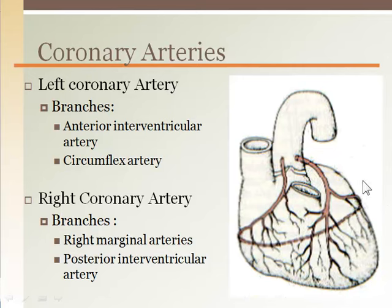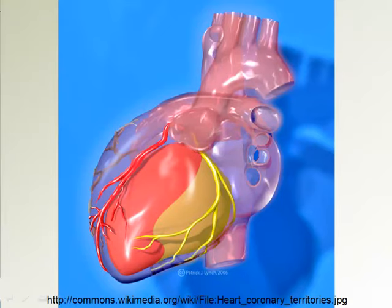The other branch the left coronary artery divides into is the left circumflex. This artery travels toward the side of the heart and then around the back, where it combines and meets up with the right coronary artery, forming a circular ring around the superior portion of the heart. In a side-view image, the left anterior descending is shown in red serving the anterior portion of the left ventricle, while the left circumflex is shown in yellow coming around to the side and posterior region.